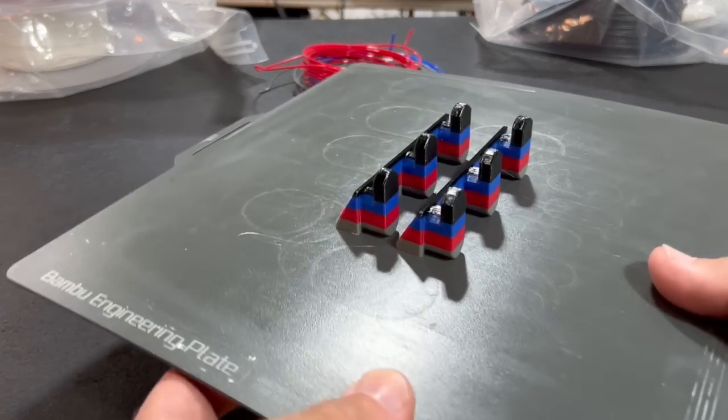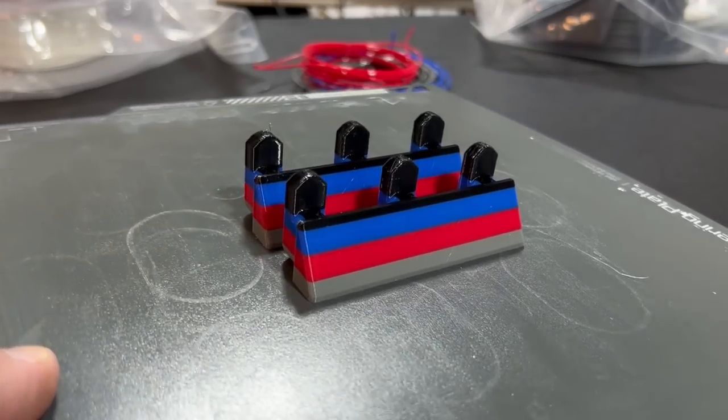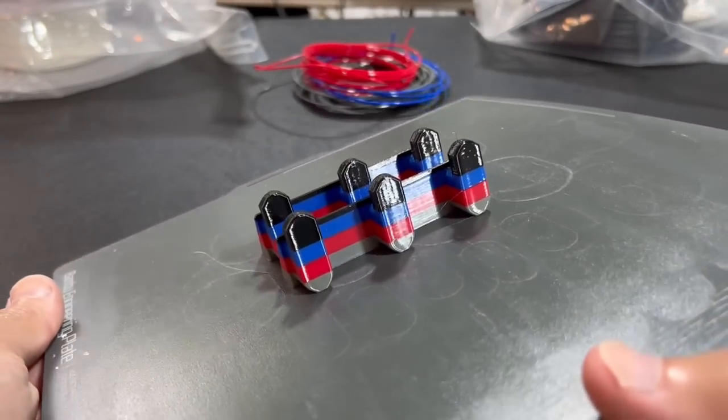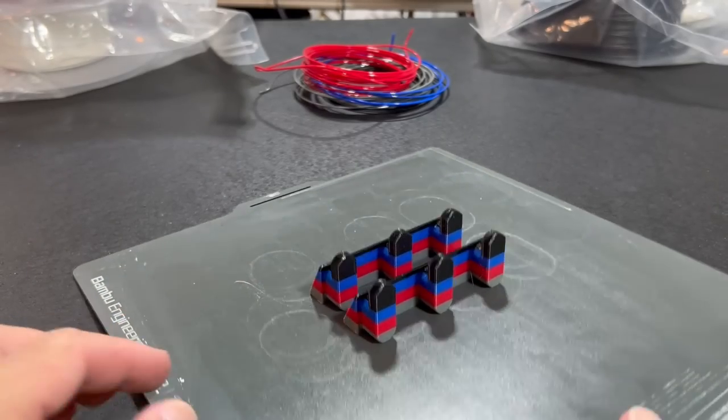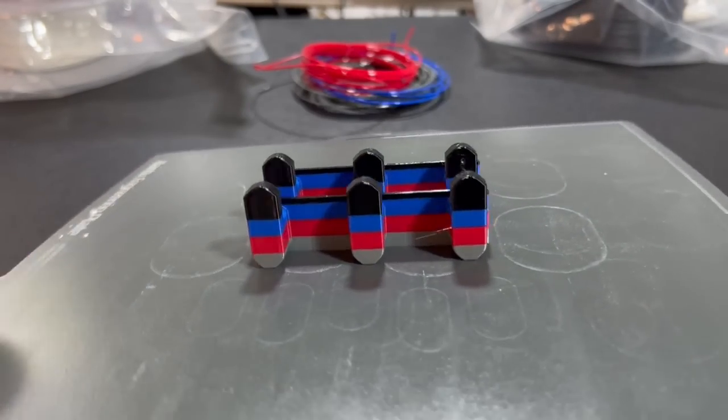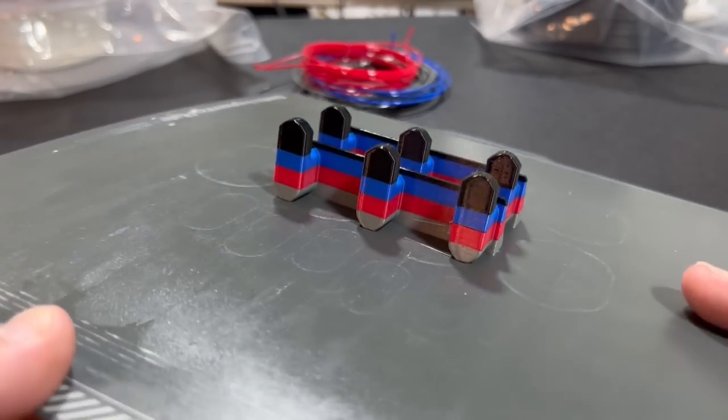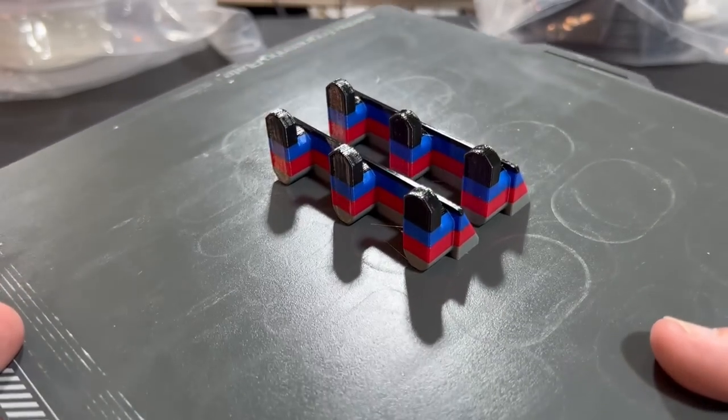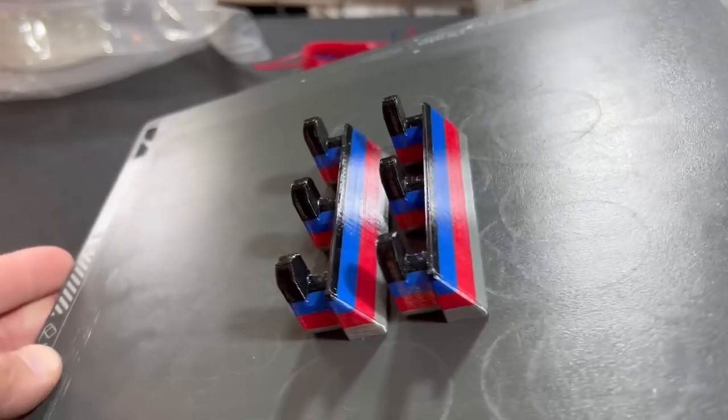Let's have a look at the completed parts. It's that indicative shine of PETG. I'm not really a big fan of that. I'm more of a matte finish kind of guy, but to each their own. So they look pretty good. A little bit of stringing here and there. I didn't dry this filament. This has actually been sitting around for quite a while.